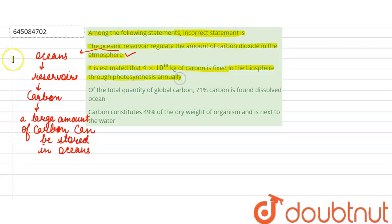This statement is incorrect because the estimated amount of carbon dioxide which is fixed in the biosphere through photosynthesis is 4 × 10^13 kg per year, that is annually.